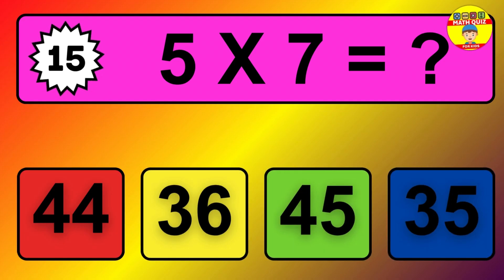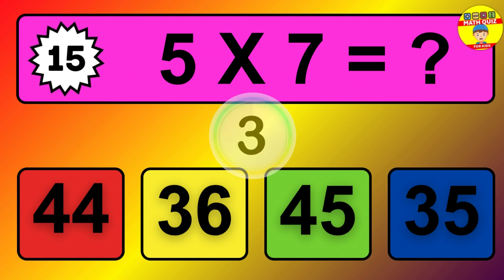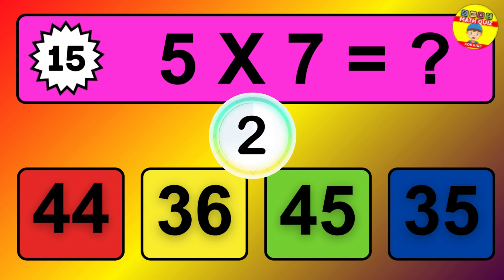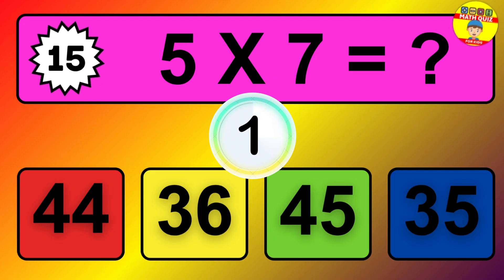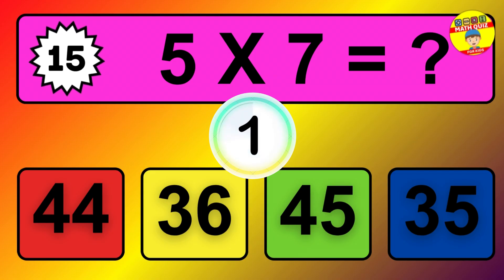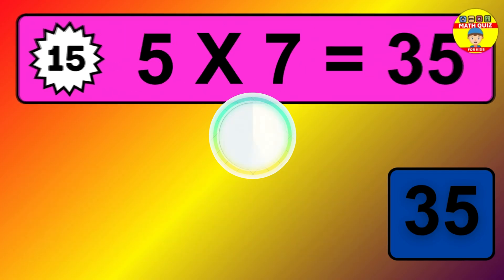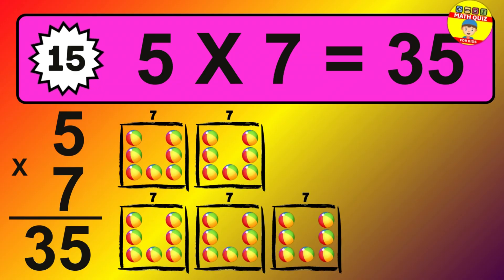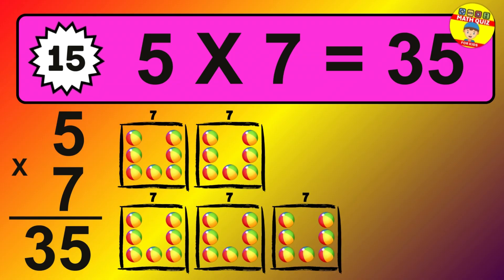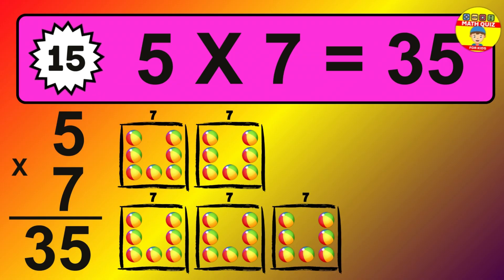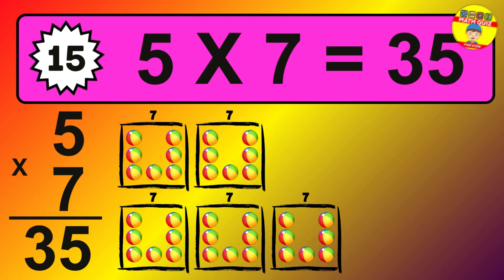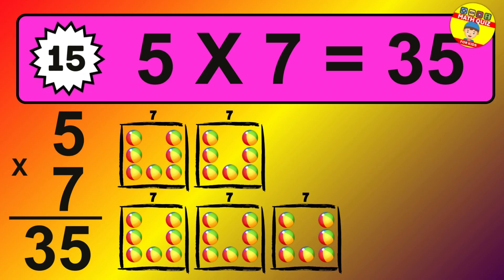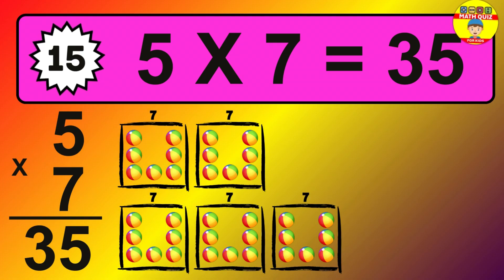Question 15. 5 times 7 equals what? The answer is 5 times 7 is 35. To calculate, we have 5 groups with 7 balls each one. So, how many balls do we have? 35 balls.